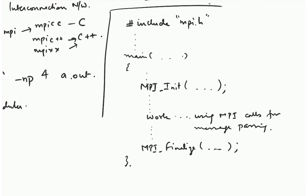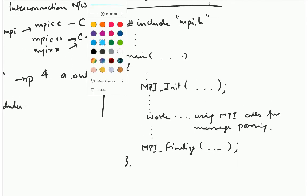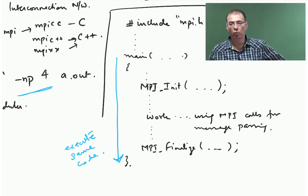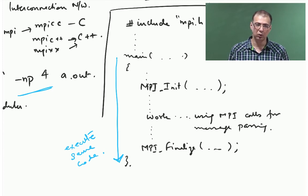One important thing you have to understand is, if you say -np 4, what does that mean? There are 4 processes which are going to get spawned. The important thing is that each one of them will be executing this exact same code. All 4 of them will execute the same code. If you want one process to do something different than the other processes, you have to explicitly code it up.